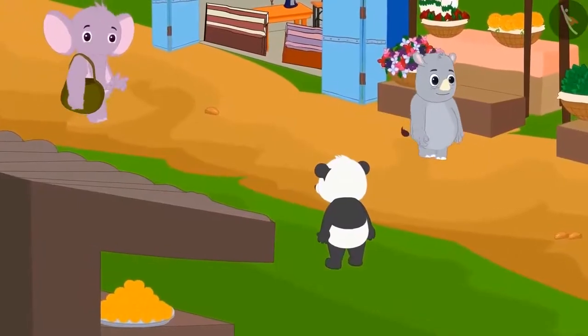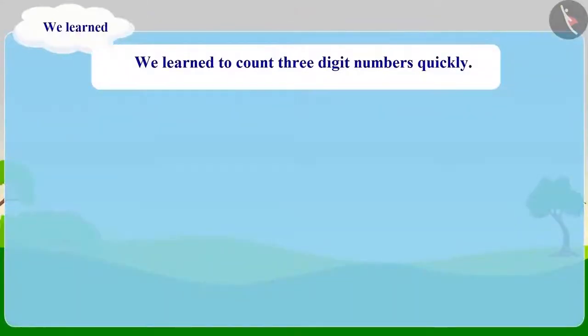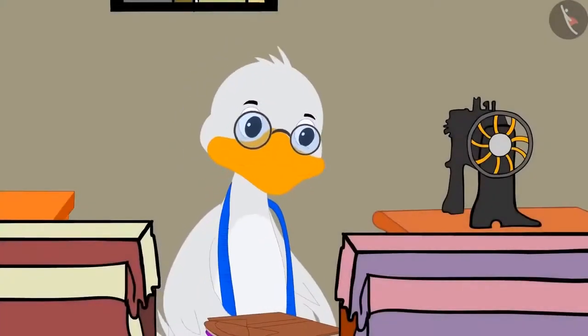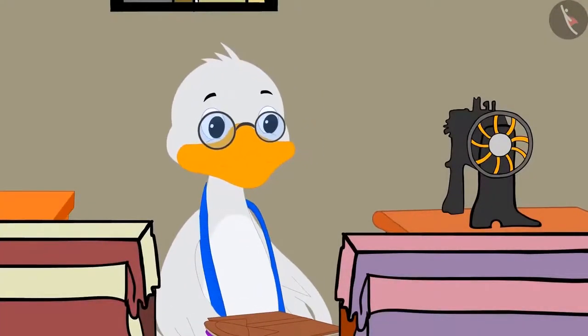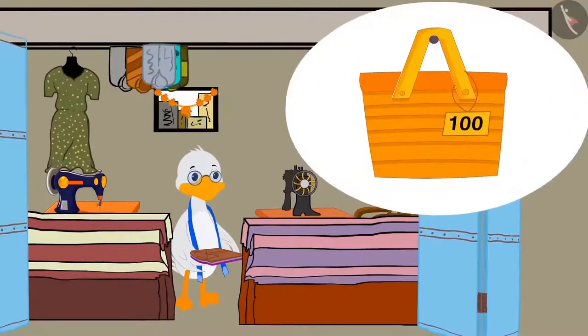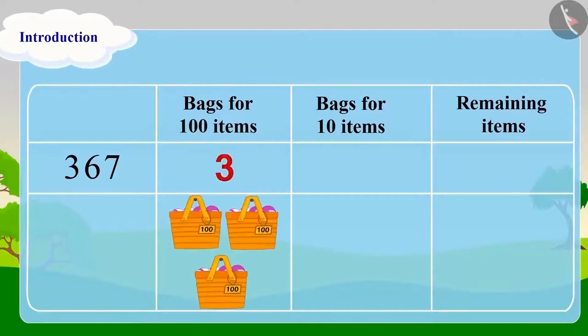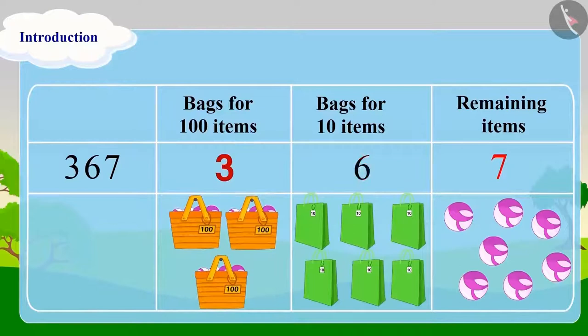Children, do you remember Appu's visit to the market? We learnt to count three-digit numbers quickly by grouping in the last lesson. Children, we learnt to write three-digit numbers in groups of 100, 10 and 1 with the help of Badbola Uncle's bags. In the same way, we can write any three-digit number in the group of 100, 10 and 1. Let's look at another example of this.